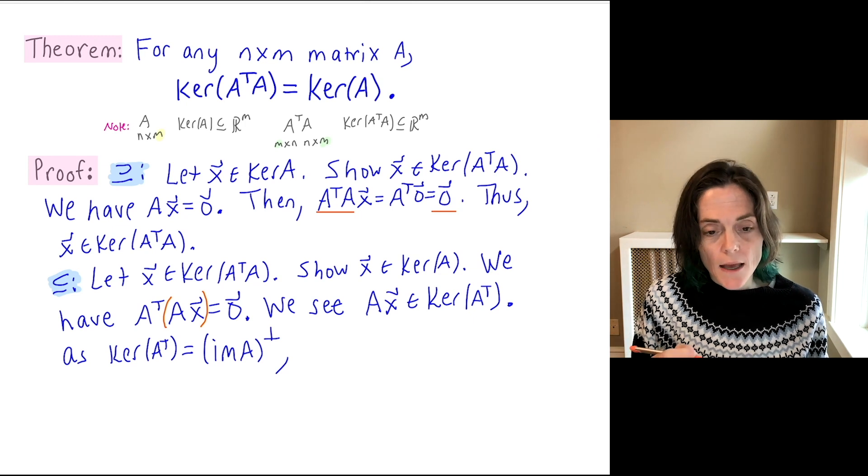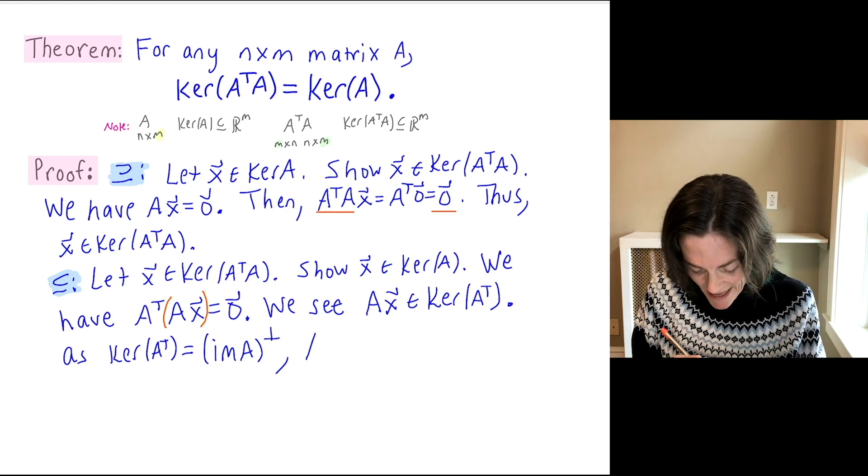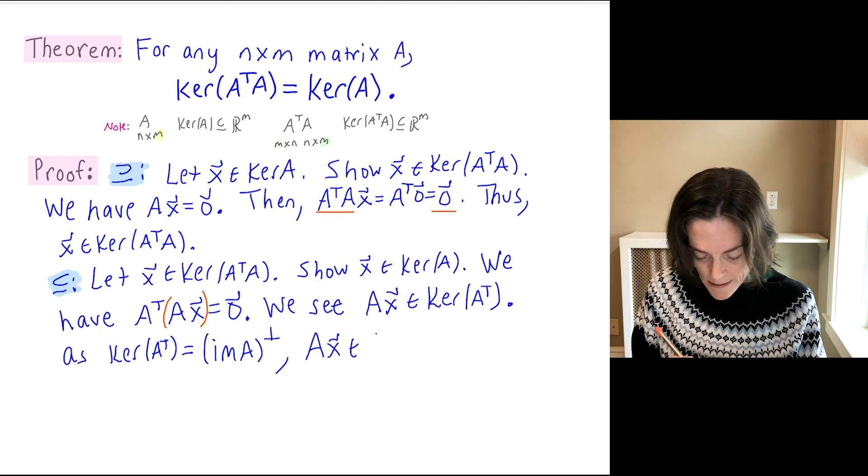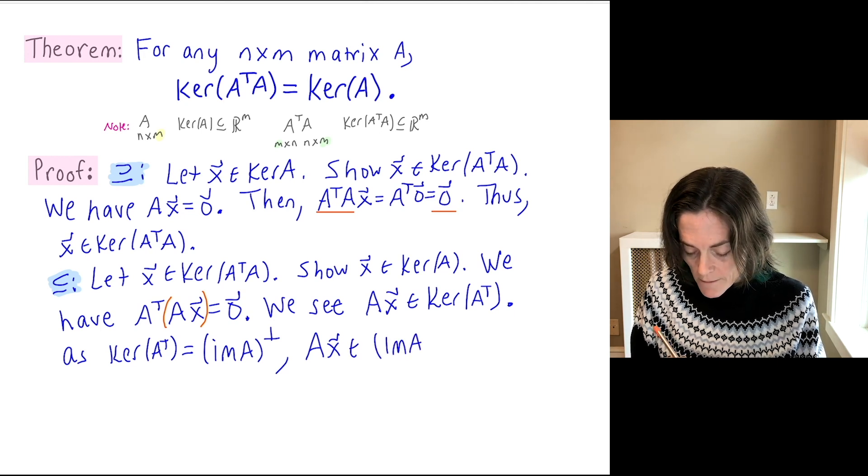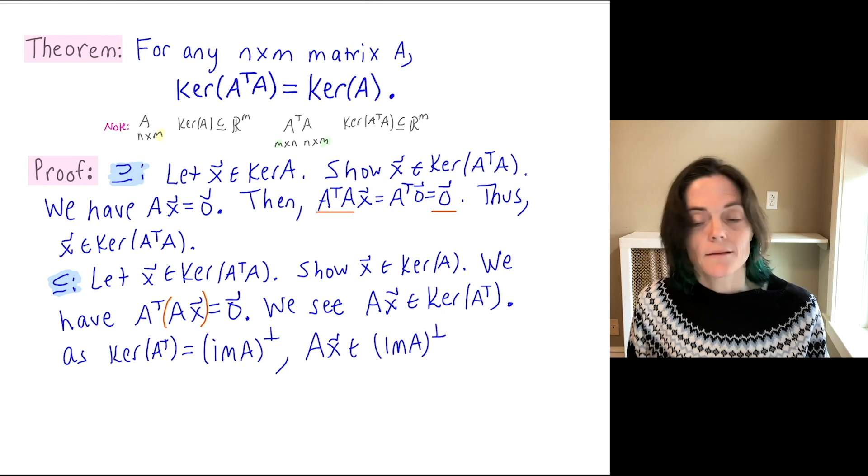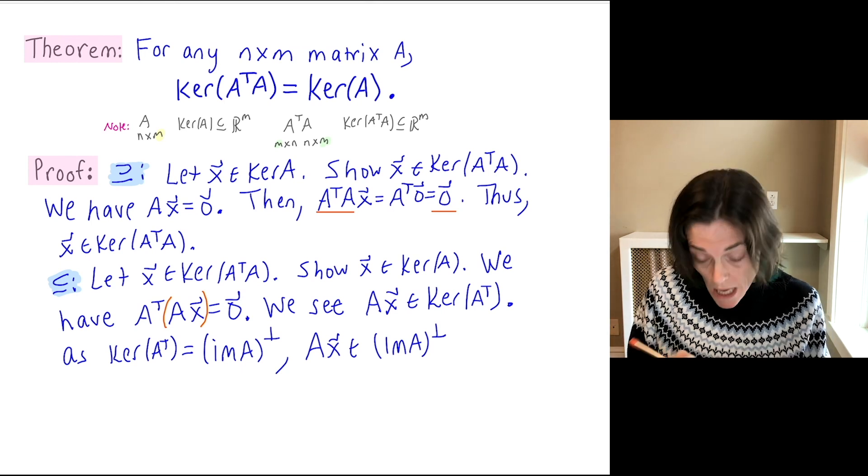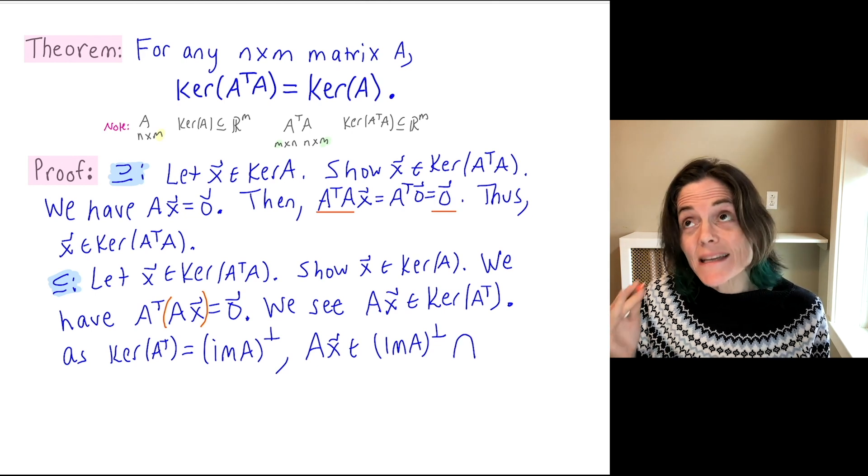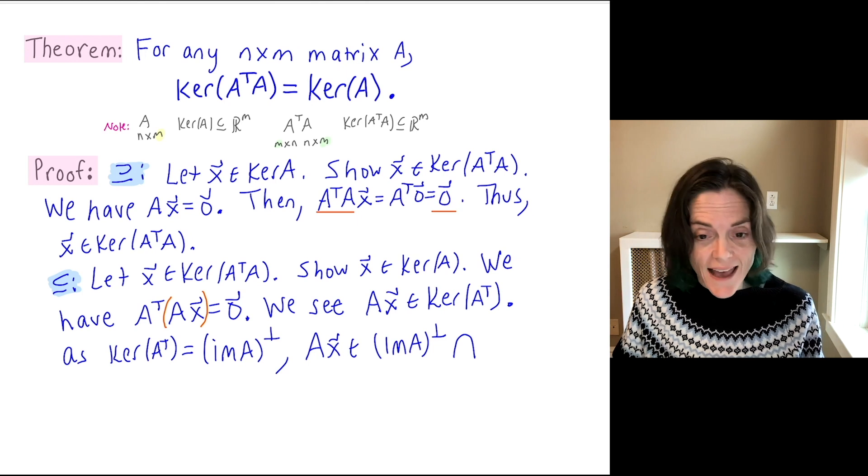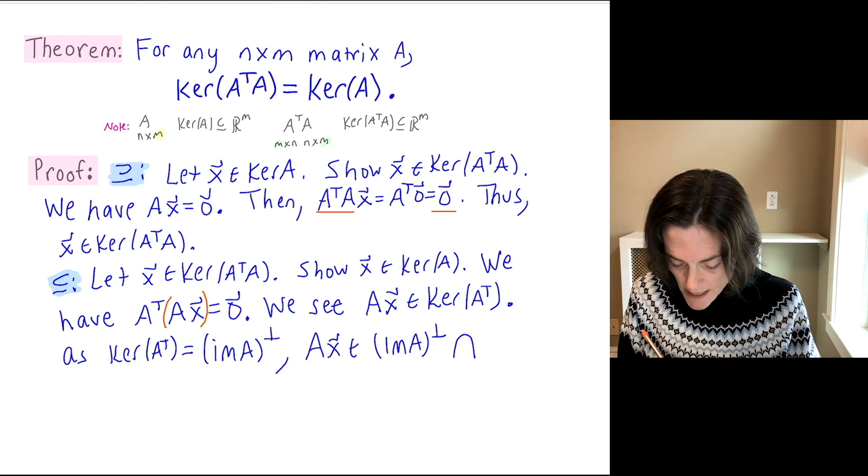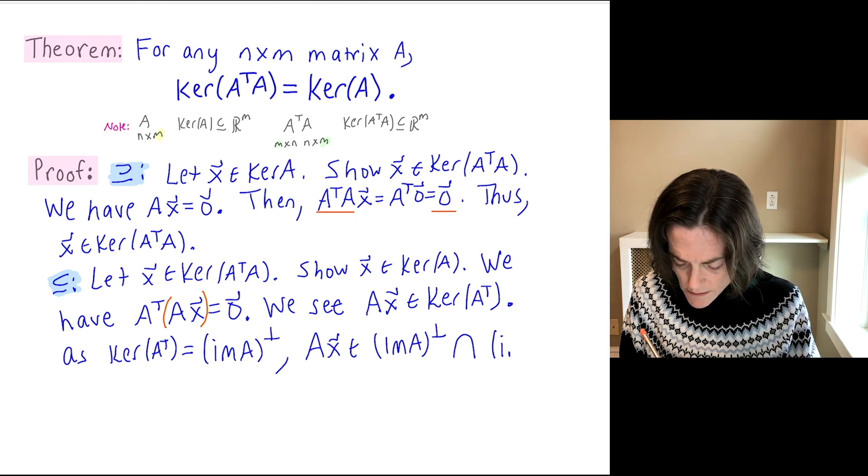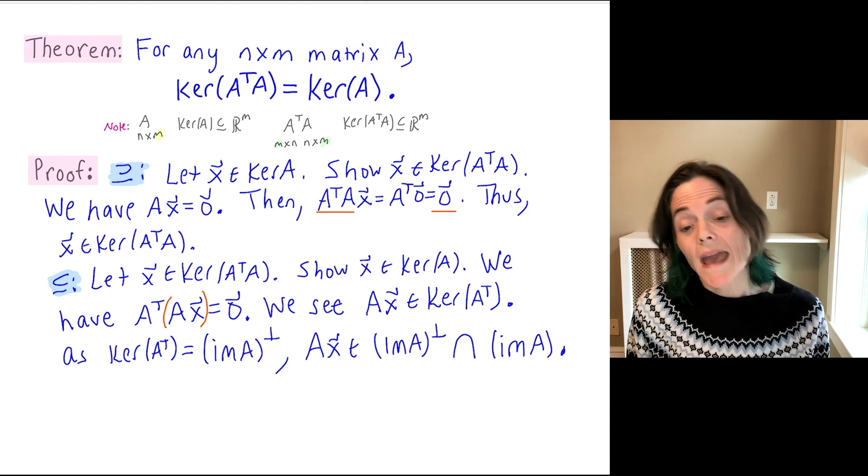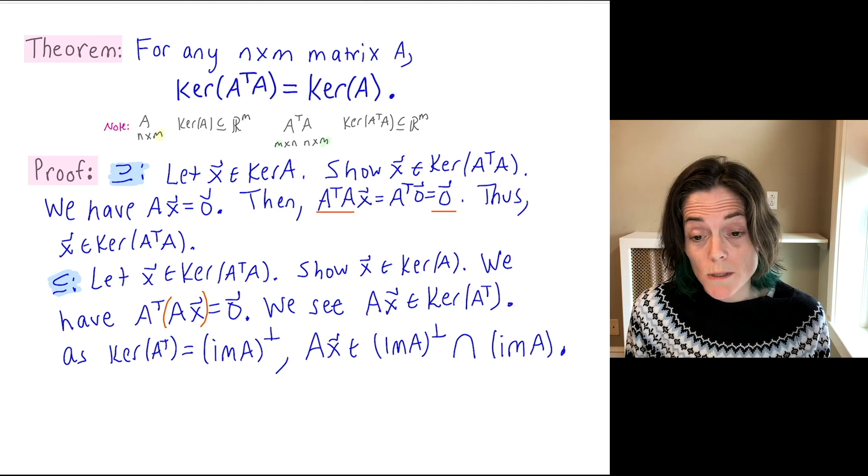What can we say? Well, in particular, Ax is in the orthogonal complement of the image of A. That's because it's in the kernel of A transpose. But it's also in the image of A. Because everything in the image of A is of the form Ax, for some vector x.